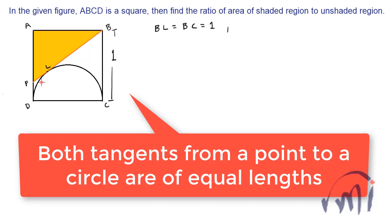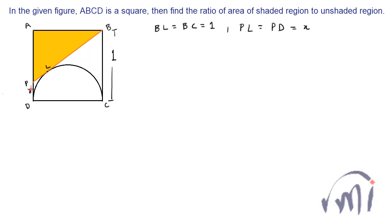And PL and PD are two tangents from point P, that means PL and PD will also be equal and suppose their length is equal to X. So if this length is equal to X, this much length will be equal to 1 minus X and length PL will also be equal to X and LB we know is 1.